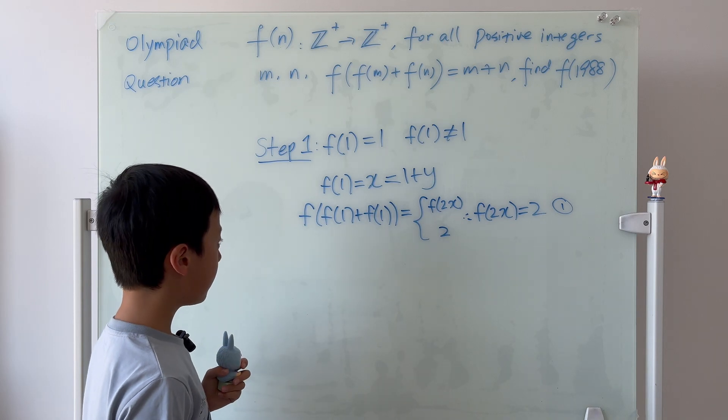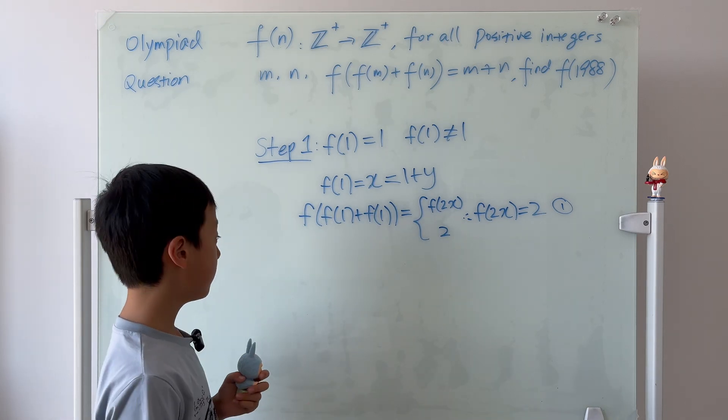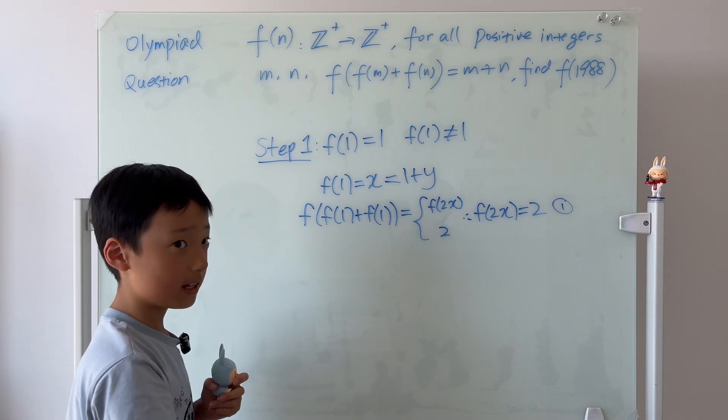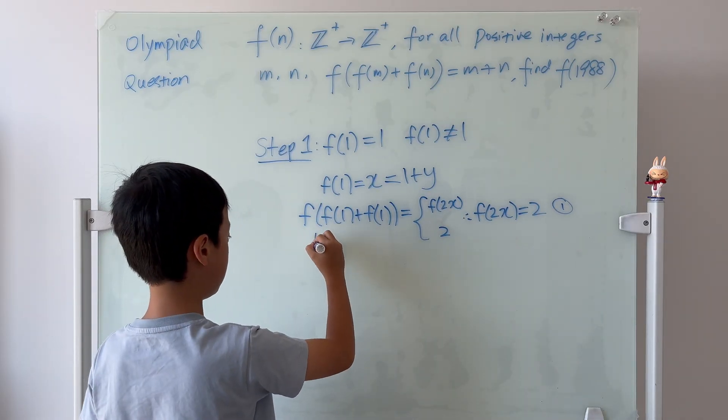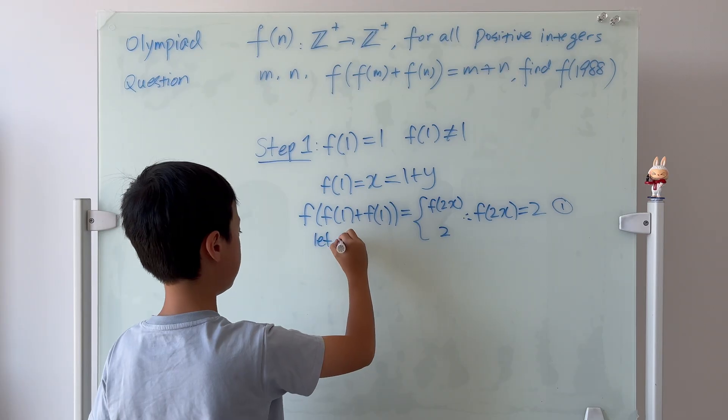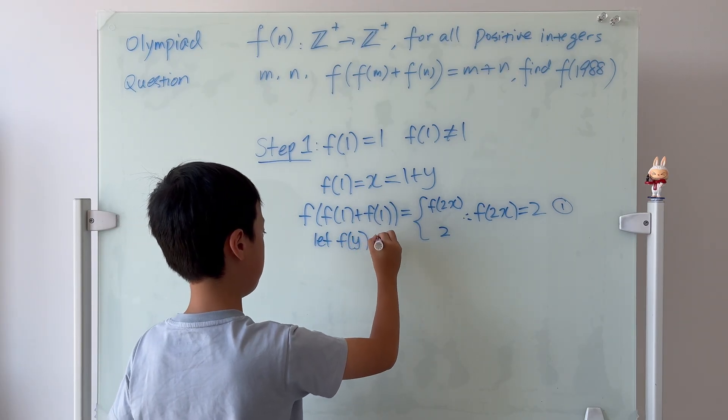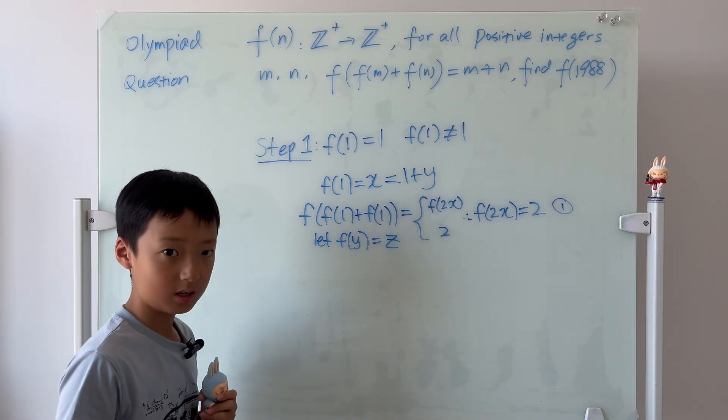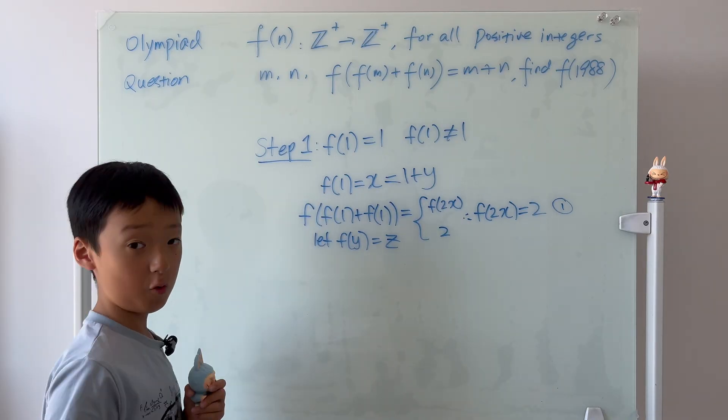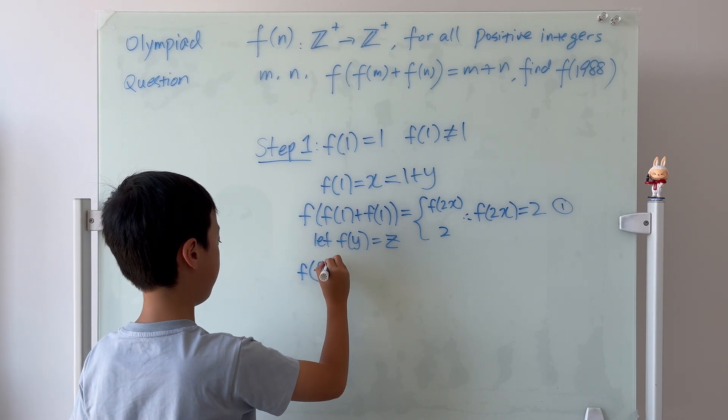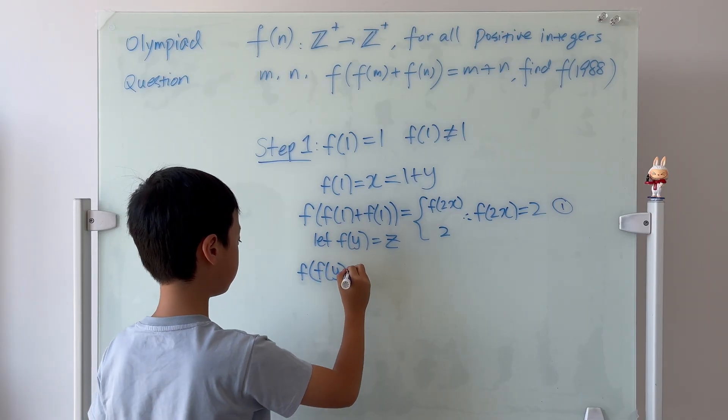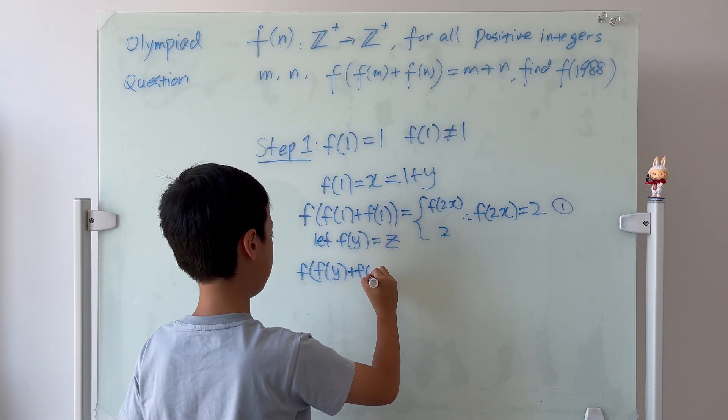Now, why don't we try f of y? But then, we can't just go in and let f of y. We have to first let f of y be z. Let f of y be equal to z. So, now we can plug in f of y. So, it's f of f of y plus f of y.